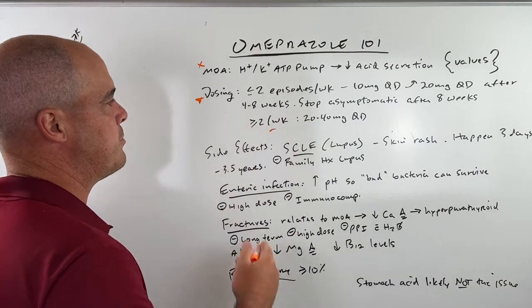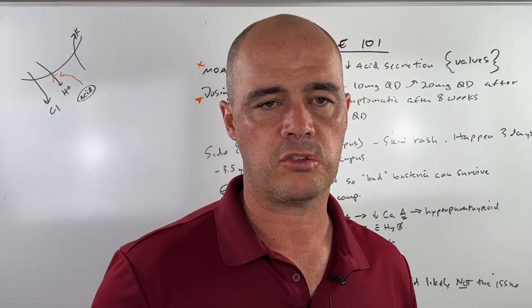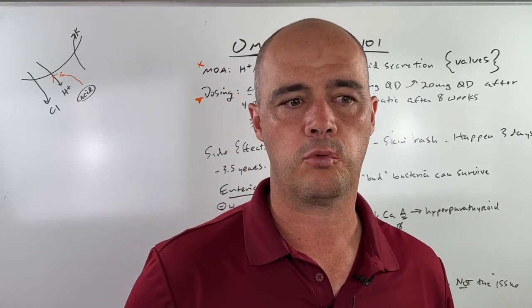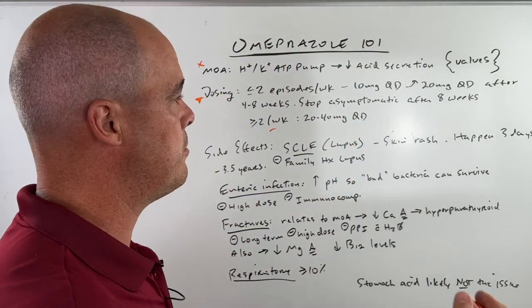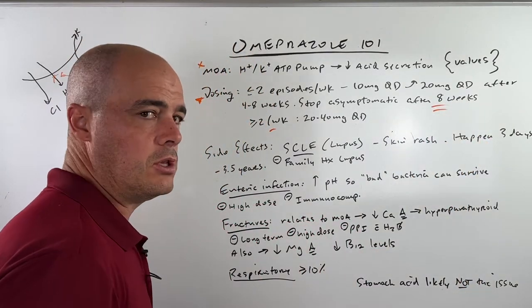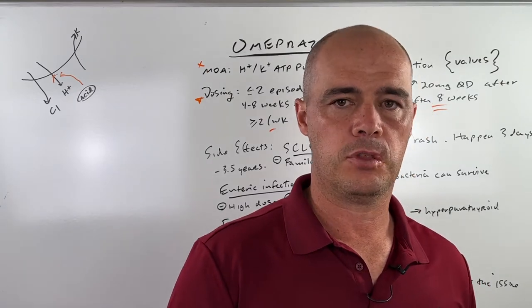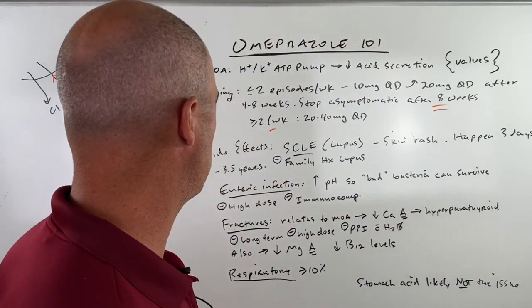If you have more than two episodes a week, it's probably going to be 20 to 40 milligrams a day, starting at 20, maybe increasing to 40. The common theme here with the dosing is if you get asymptomatic after eight weeks, you really do want to try to get off it. And there's some reasons for that.